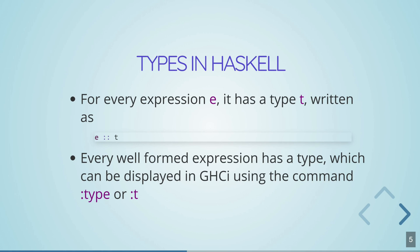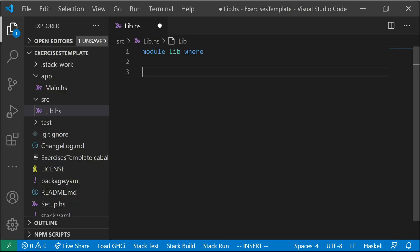So every expression E is going to have some type T and we denote the type of stuff in Haskell using this double colon operator. So we'll say E double colon T means whatever that E thing is, it has type T. So every well-formed expression, which means every valid expression, every expression that isn't just like an error right off the bat has a sort of type and you can open up GHCI and you can use the type command, this colon type to see what that type is.